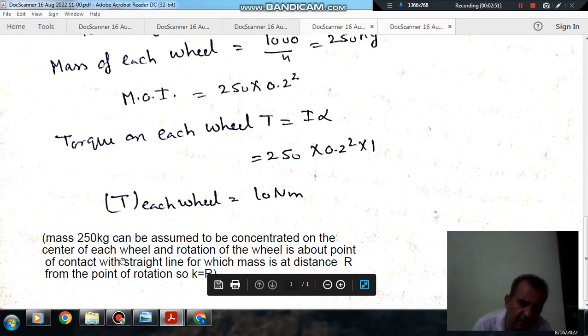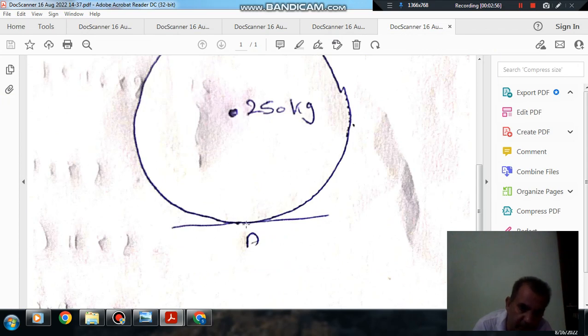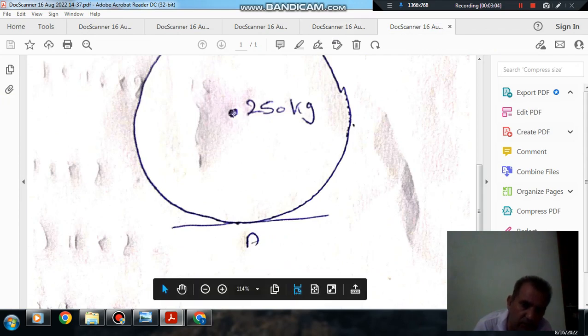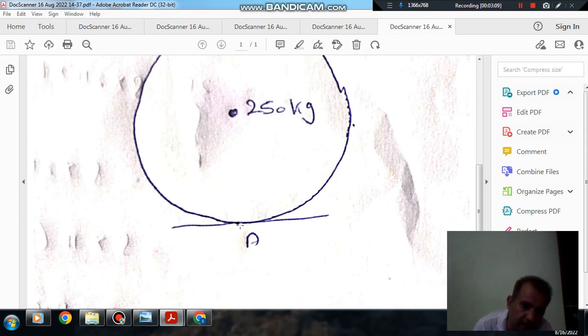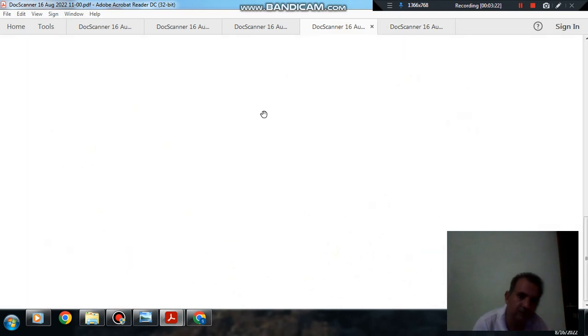Here again, explaining the same thing: the mass 250 kg can be assumed here, and its distance from the point of rotation is the radius of the vehicle. So, as it is a point mass, for the point mass, the radius of gyration is the same as the radius. So, this is the point mass, and its distance from the point of rotation is the radius of the wheel. That's why we have taken radius of gyration as radius of the vehicle.